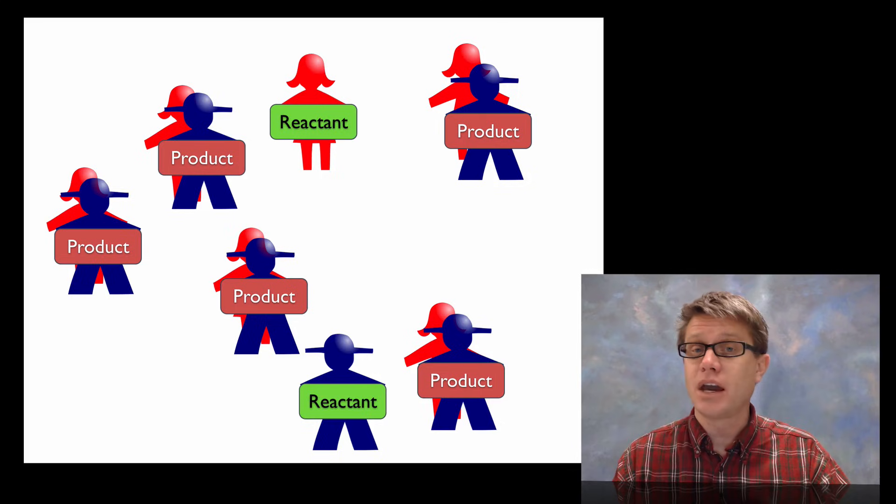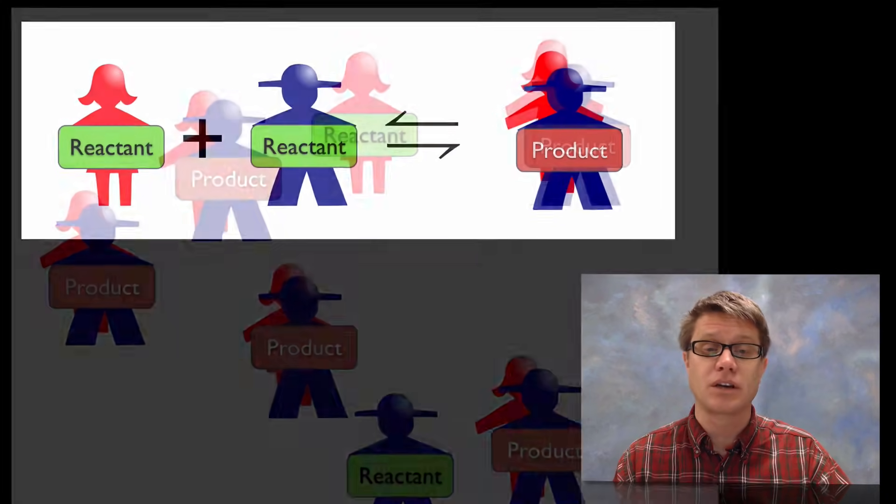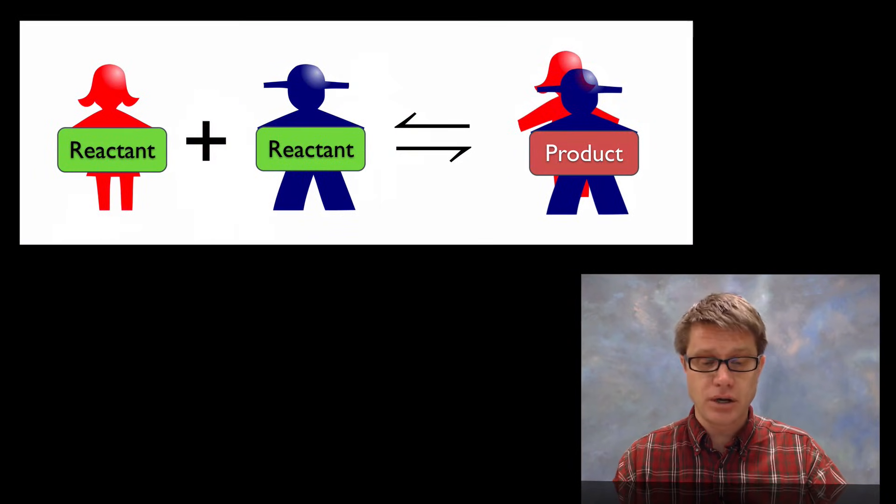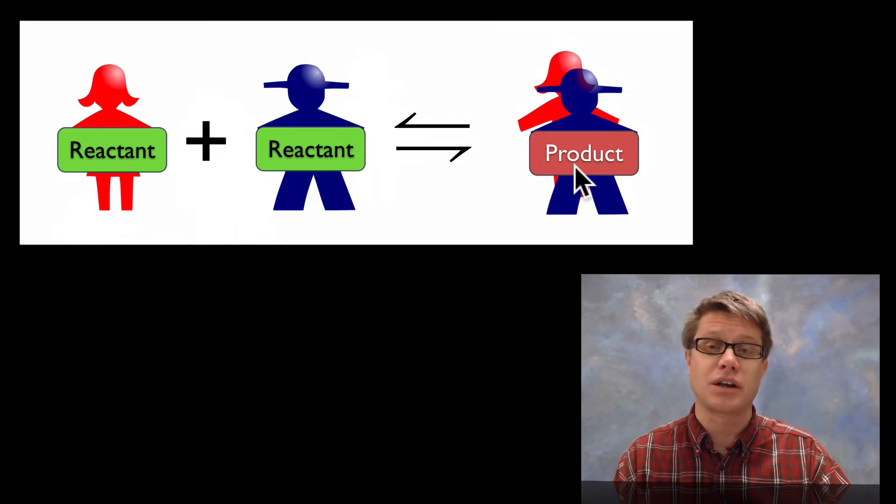If we label them, everybody before they started coupling up is a reactant. Everybody after it is going to be a product, but it doesn't just stay that way. It can reverse again. So if I were to write this as an equation, we would have our reactants on the left side. And then this double arrow means they can become products, but those products just as likely can become reactants again.